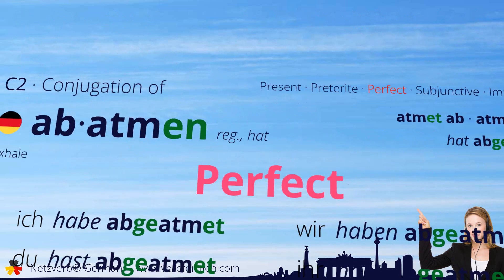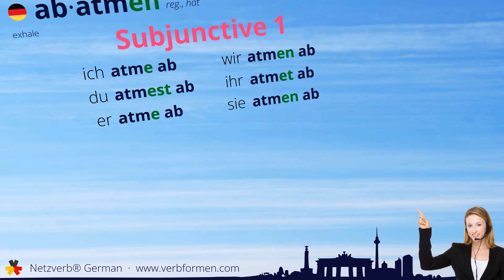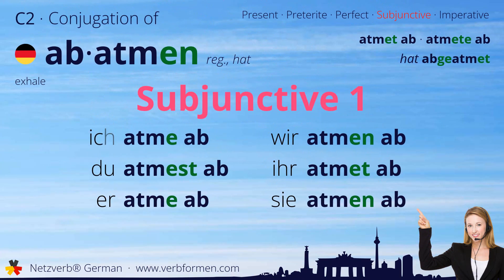Next up is the subjunctive one. Ich atme ab. Du atmest ab. Er atme ab. Wir atmen ab. Ihr atmet ab. Sie atmen ab.